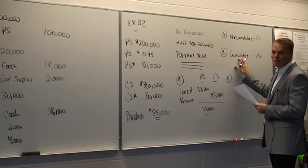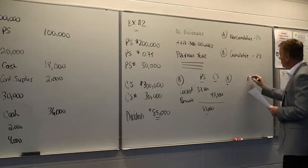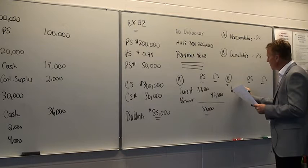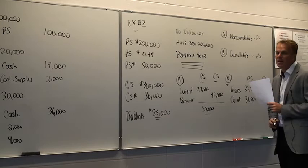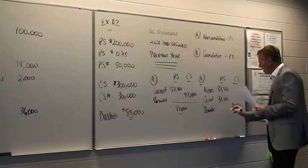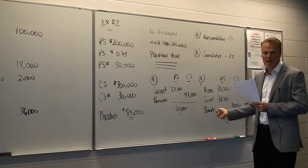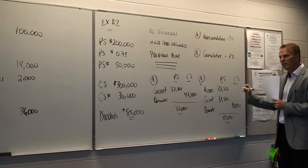For part B, the preferred shareholders are cumulative, which means that if years are missed, that has to be paid before we can get into the current year. So that changes it now. So the preferred shareholders, there's going to be the arrears, the preferred shareholders, they're going to get that. They're also going to get first right in the current year, $37,500. The remainder now will go to the common shareholders, $10,000. There's your $85,000. But notice the big difference now. The common shareholders get a lot less because the preferred shareholders were a cumulative type of share.